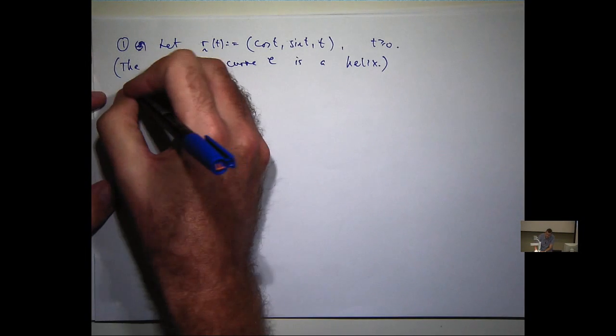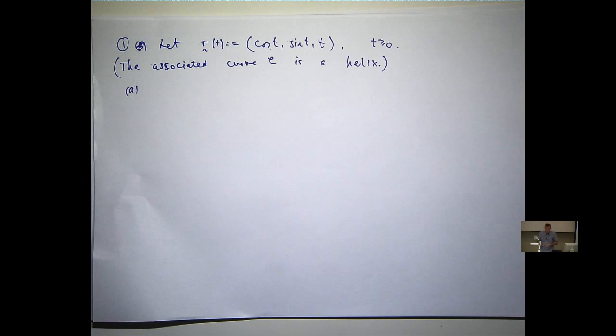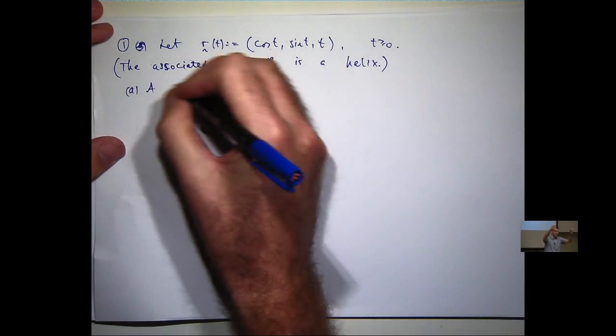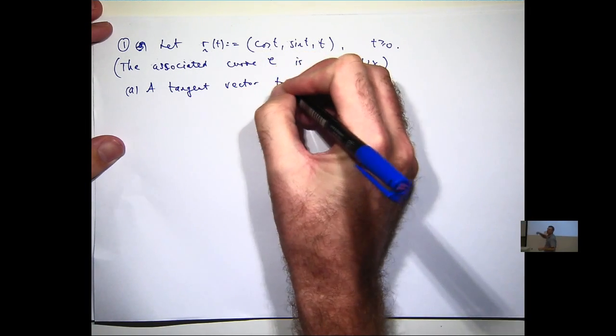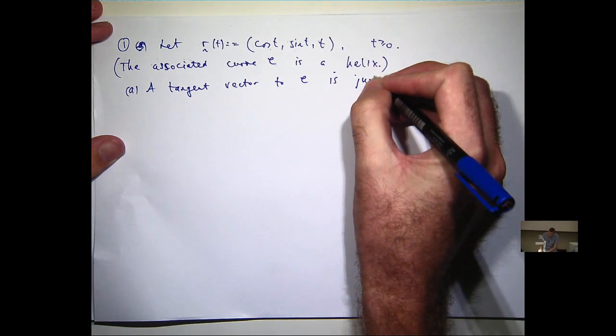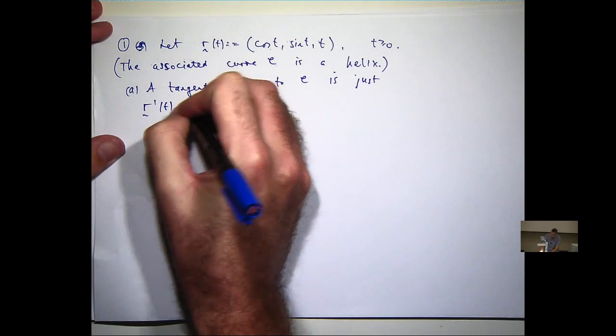Part A says compute a tangent vector to the curve, a unit tangent vector. So how would we compute a tangent vector? Anyone remember? Differentiate. Right, that would give us a vector that's tangent to the curve, and then I can normalize it. It's just the derivative.